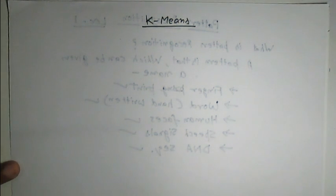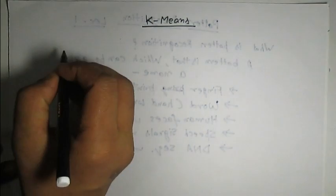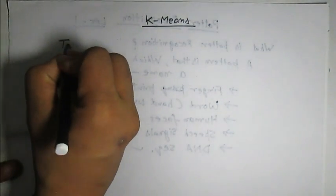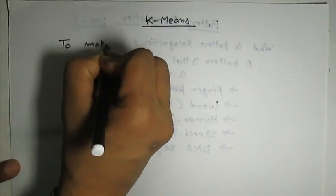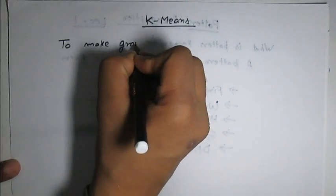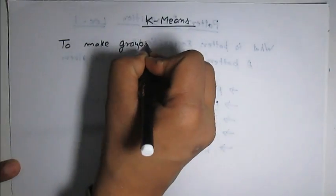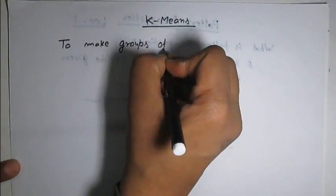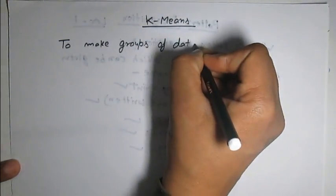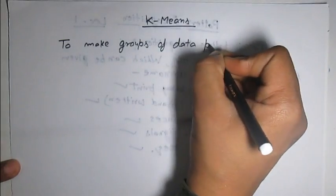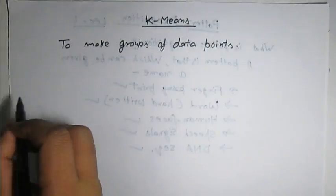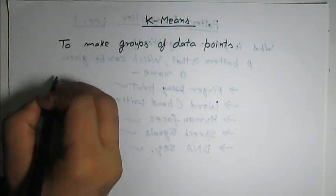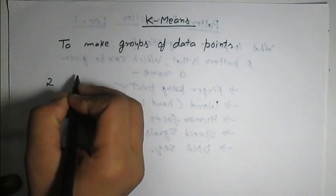K-Means is used to make groups of data points. Let us take some examples. These are the data points.